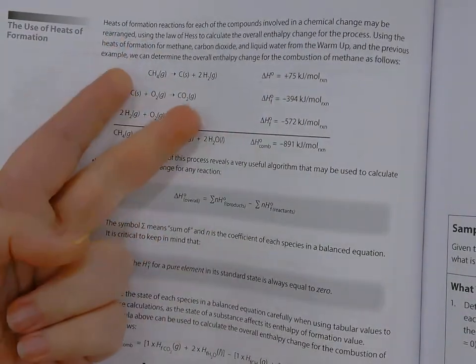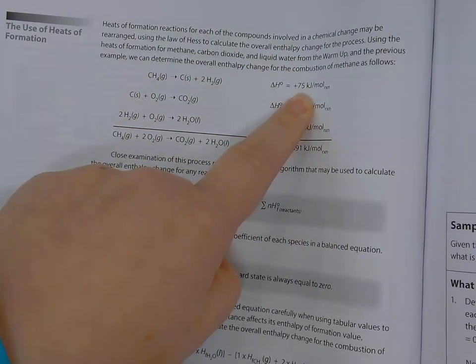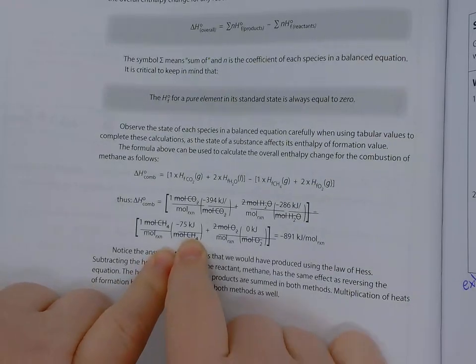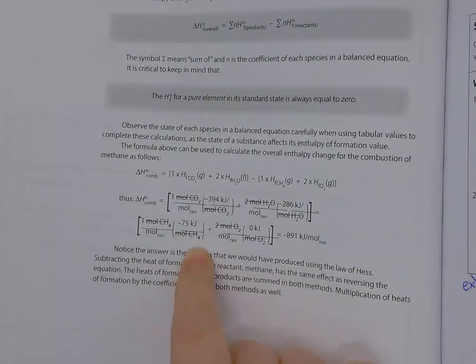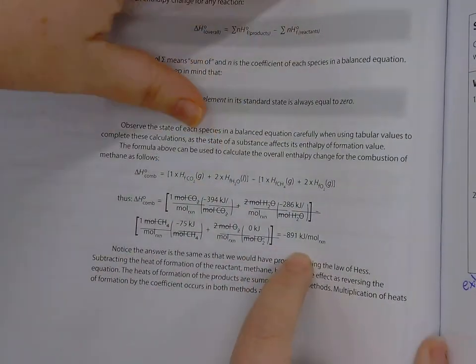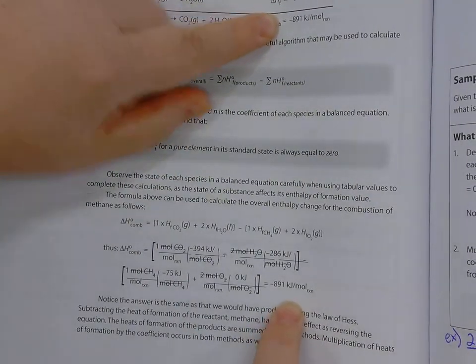The reaction had to be flipped so that CH4 was on the left side, so it flipped the sign. So our equation is going to do that step for us, which is really nice. By doing products minus reactants, we're going to get the proper sign there. And if you work out the math, we get the exact same value as we did before, negative 891 kilojoules per mole reaction.